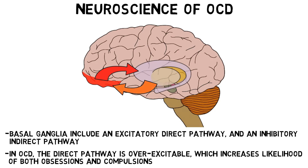Thus, according to this model, overactivity in the orbitofrontal cortex and the direct pathway of the basal ganglia increases the occurrence of both obsessions and compulsions.